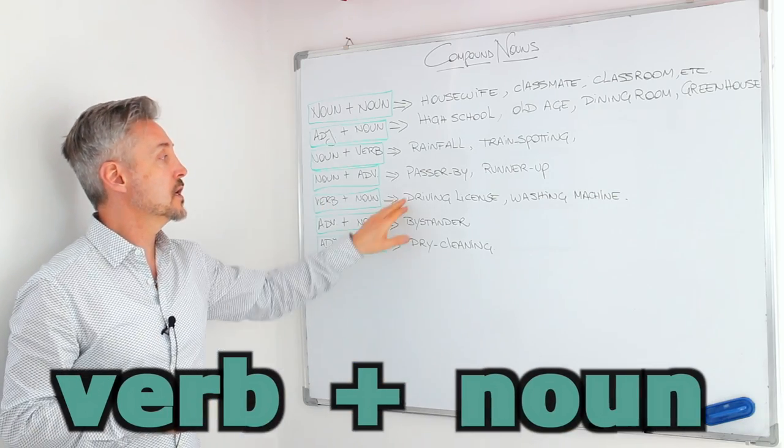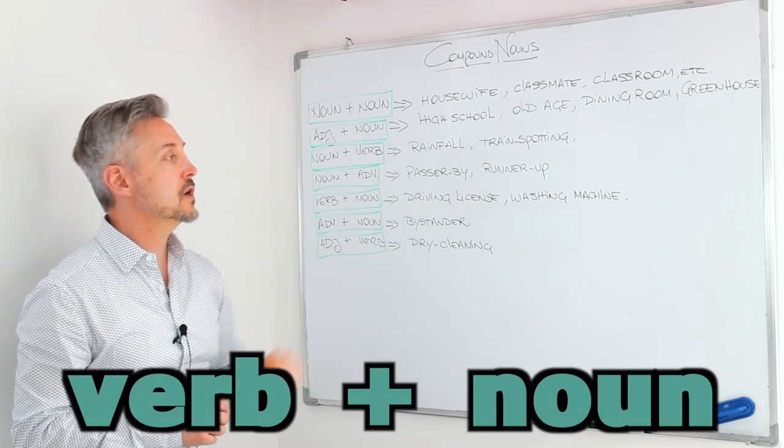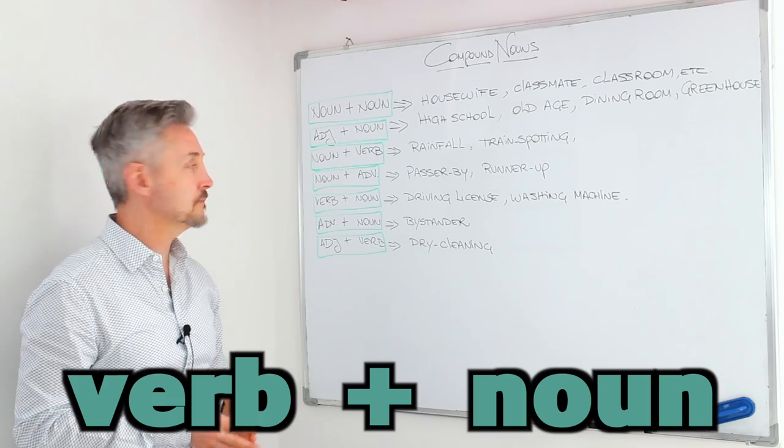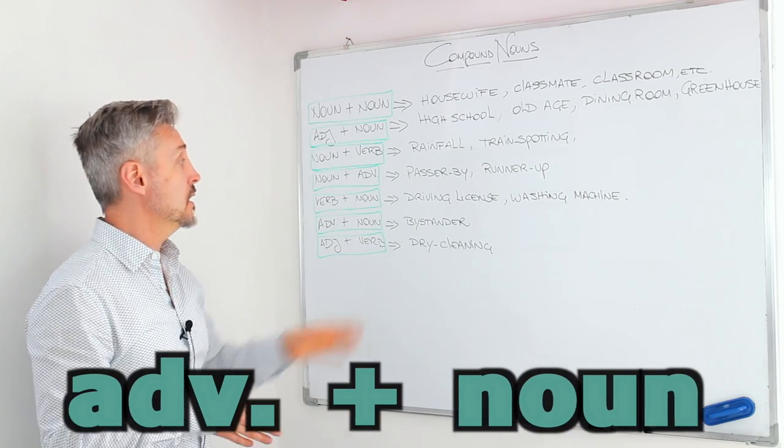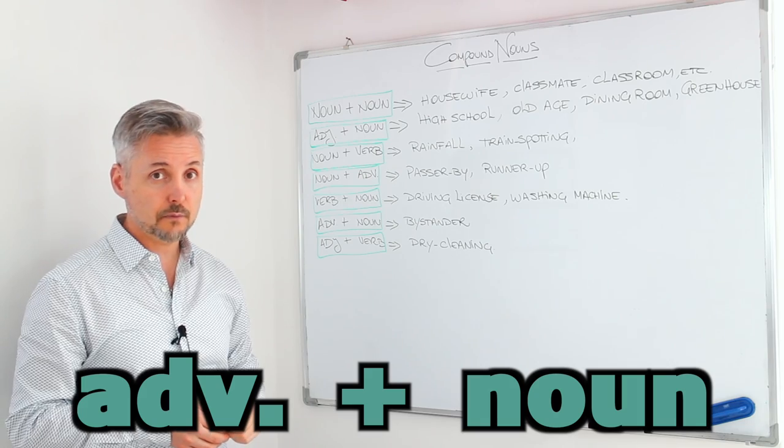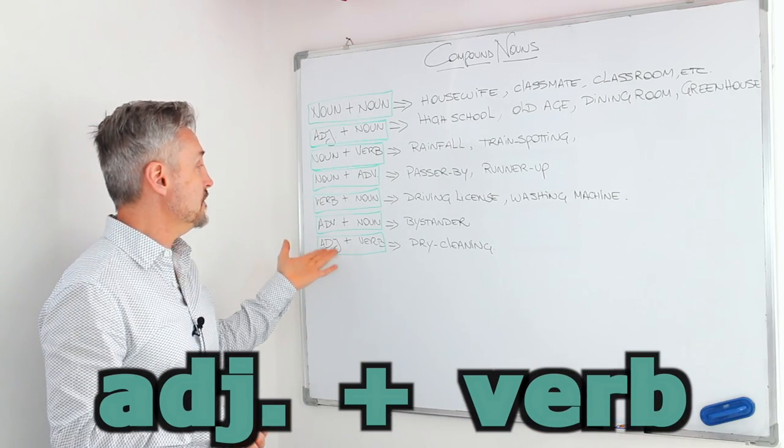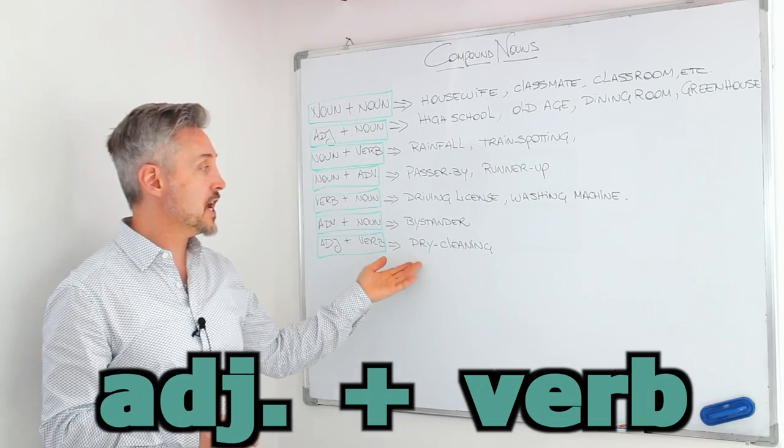Or verb plus noun. Driving license, washing machine. Adverb plus noun. Bystander, for example. And adjective plus verb. Dry cleaning.